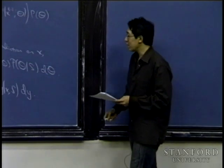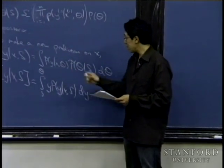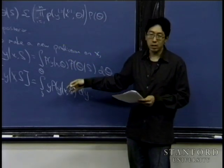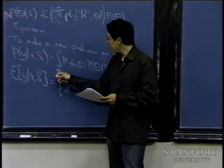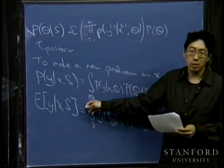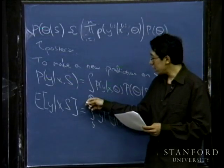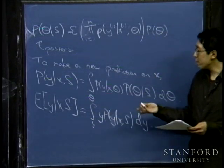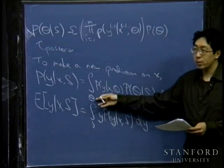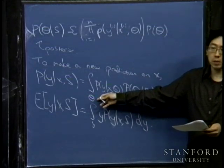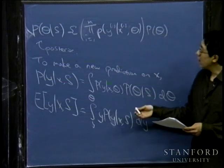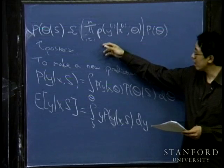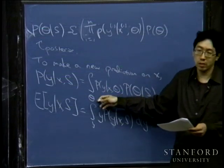Let's try to make this more concrete. It turns out that for many problems, both of these steps in the computation are difficult. If theta is an n+1 dimensional parameter vector, this is an integral over R^(n+1), and numerically it's very difficult to compute integrals over very high dimensional spaces. So usually it's hard to compute the posterior on theta, and also hard to compute this integral if theta is very high dimensional. There are a few exceptions for which this can be done in closed form, but for many learning algorithms like Bayesian logistic regression, this is hard to do.